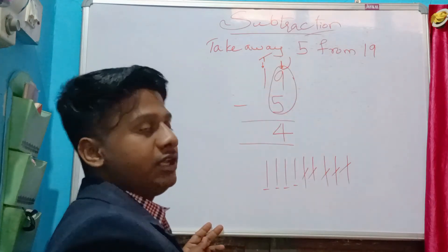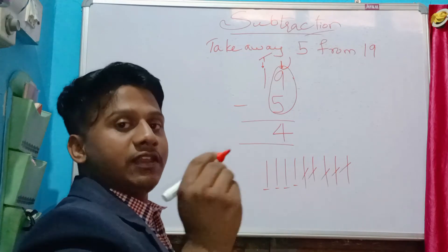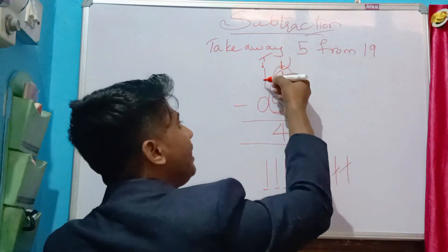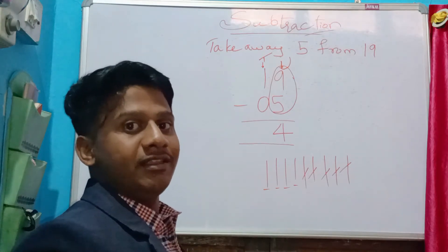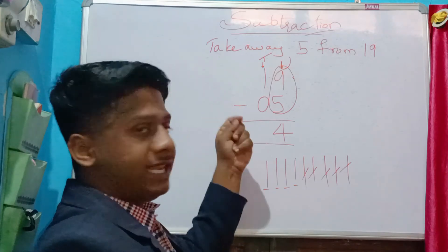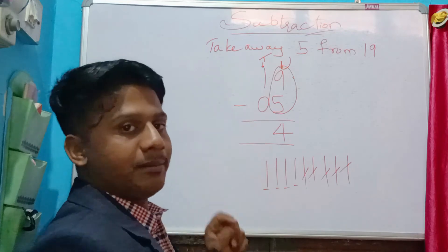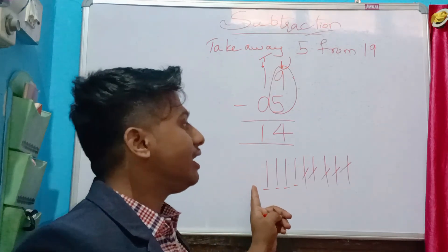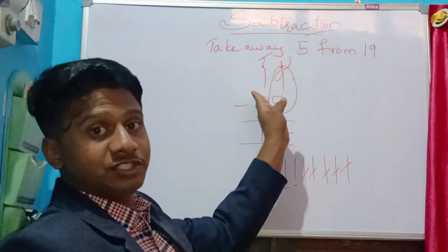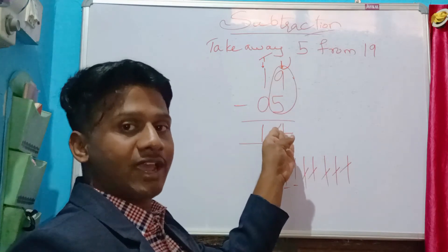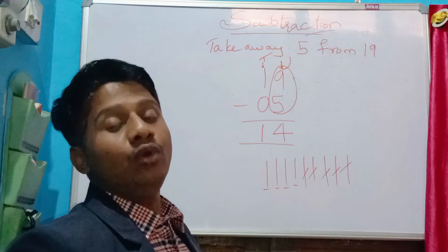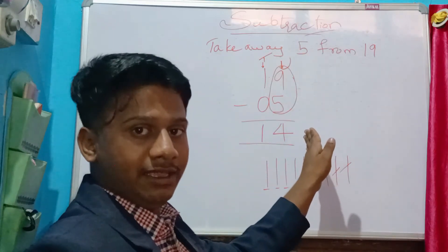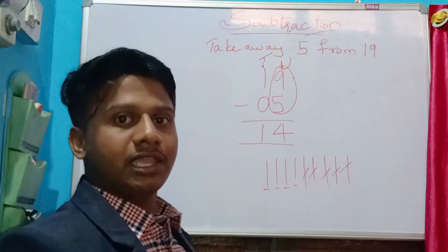Now at tens position we have 1, and the second number has nothing there — if nothing is there, consider it zero. So 1 minus 0: when subtracting or adding any number with zero, the answer is the same number, so it is 1. Write 1 at tens position. The answer is 14. This is simpler than drawing 19 lines. For addition also, you can follow the same approach — start from units position, then tens position.